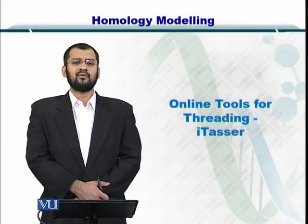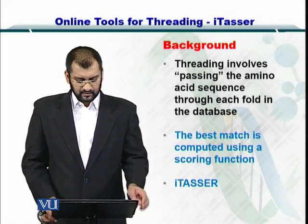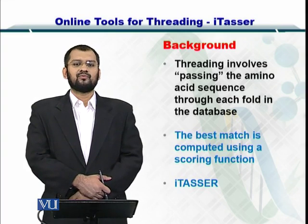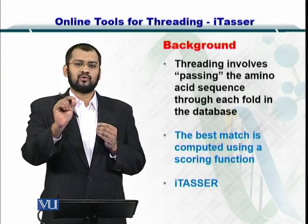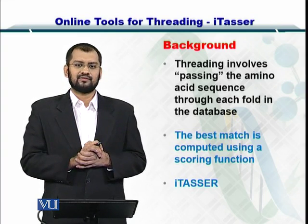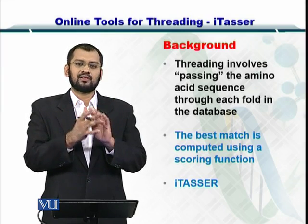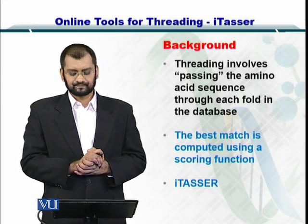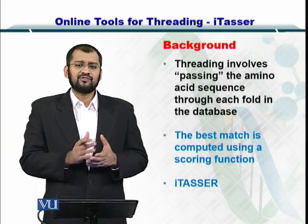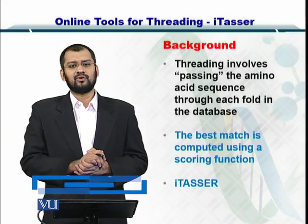Now we will look at a software that can be used to perform fold recognition or threading. The threading process involves passing the primary sequence of a protein through the various folds from fold databases, thereby arriving at the best collection of folds and bringing those folds into a single structure to create a tertiary structure for the protein. The best match is scored using z-scores and you finalize your prediction.